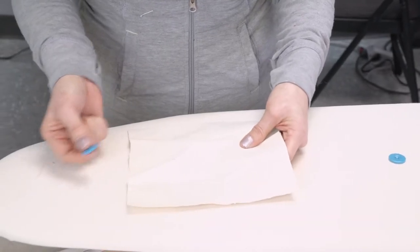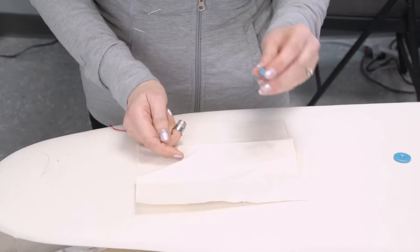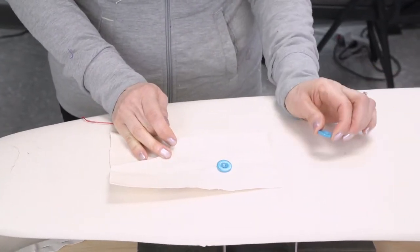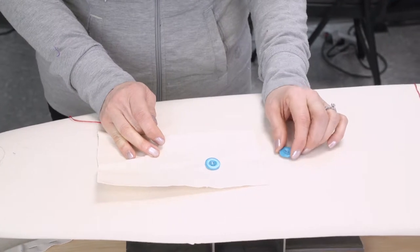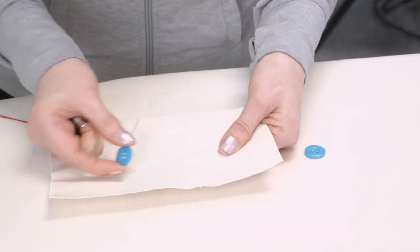We're going to sew on a button. I'm going to show you two button styles. The first is just the basic button application where the button is flat to the material, and the other one will be a shank button. It's where the button is slightly raised. You'll see that more on outerwear and coats.